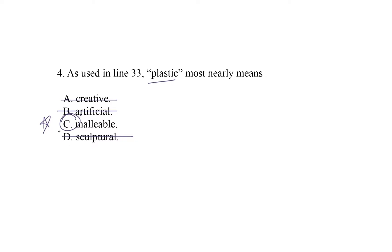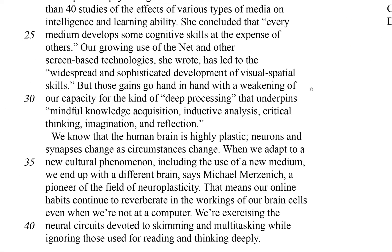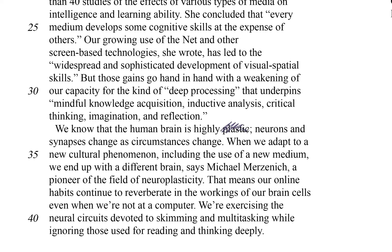So that was Plan A. We crossed out the word in the passage and we made a prediction before we looked at the choices, and then we found a match based on that prediction. But let's say you're having trouble making a prediction — let's head to Plan B. Instead, let's take the choices and plug them into the sentence. Let me erase my work. I'm going to cross out plastic again and then start substituting in the choices.